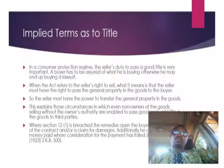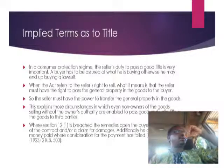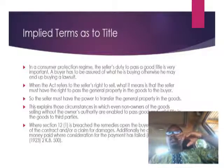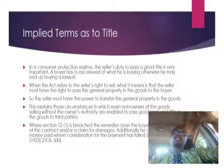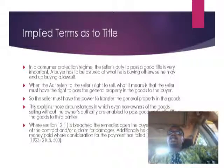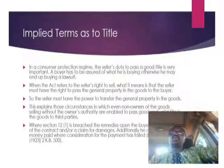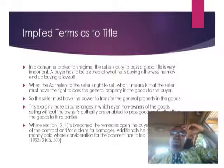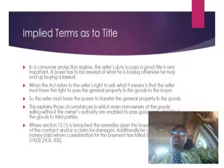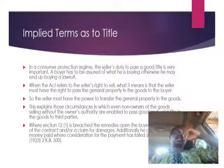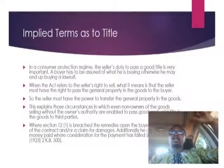Subsection 3 provides for the warranty of freedom from encumbrances and charges. Encumbrances refers to lesser rights being created over the property — certain rights to the goods being given to a third party, which are lesser than the right of ownership. The most superior right to a good is the right of ownership, but there could be other rights that other persons may have — for example, if the goods are actually pledged to a bank or financial institution in exchange for credit facilities.